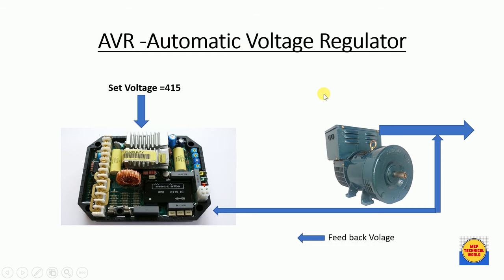Next is the AVR — Automatic Voltage Regulator. The AVR maintains constant output voltage and also controls the DC excitation of the alternator. We can set a reference voltage, and the AVR takes feedback voltage from the output terminal of the alternator. The controller compares output voltage with reference voltage, and according to the error signal — the difference between reference and feedback voltage — it controls the DC excitation of the field winding to maintain constant output voltage.